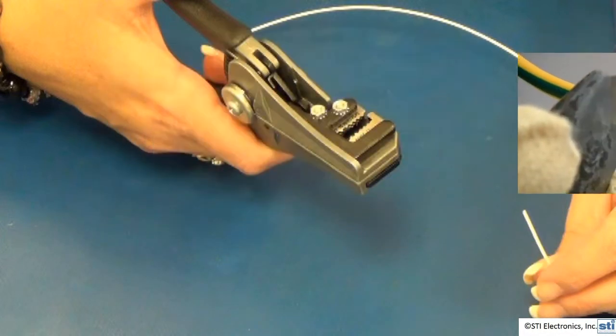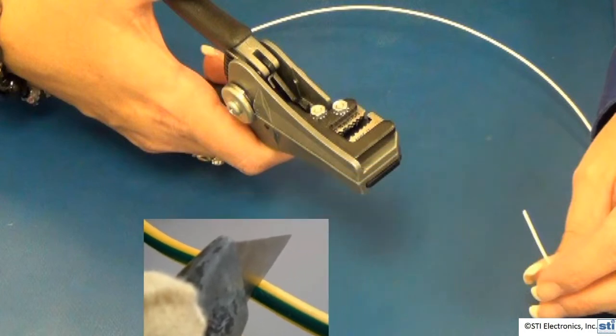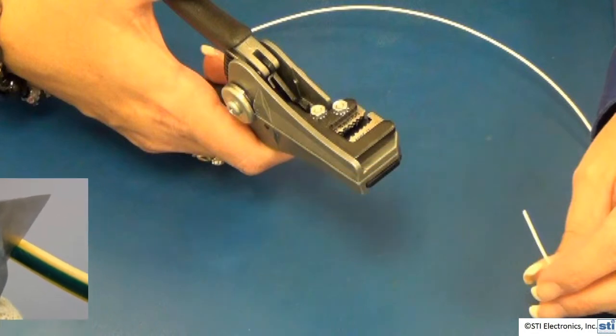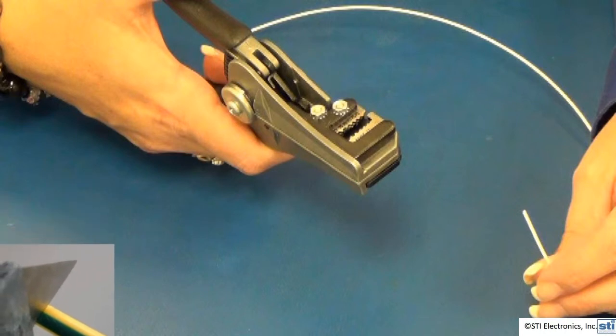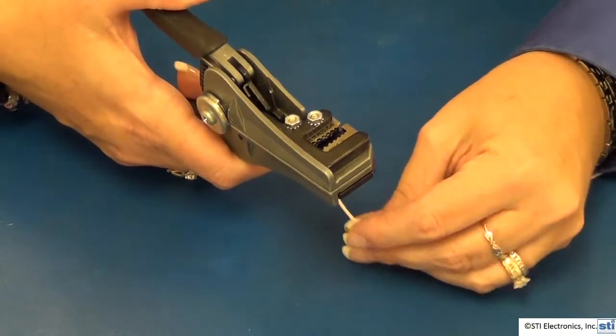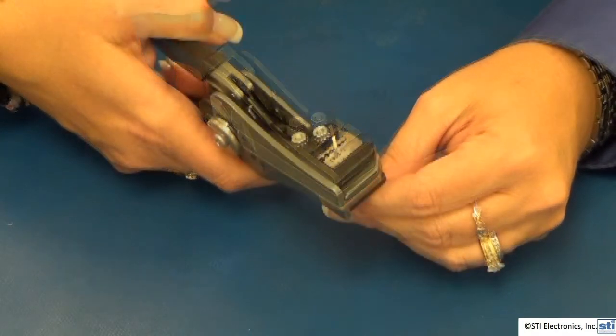Of course, at no time would you be allowed to use an X-Acto knife, scalpel, or pocket knife for stripping the insulation. We are going to demonstrate fixed die configuration.